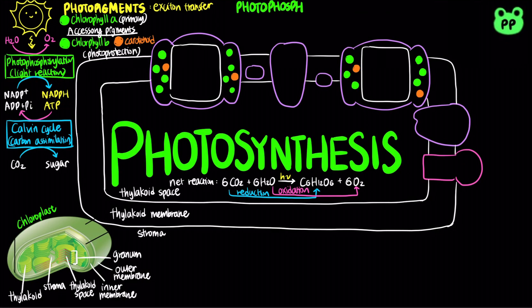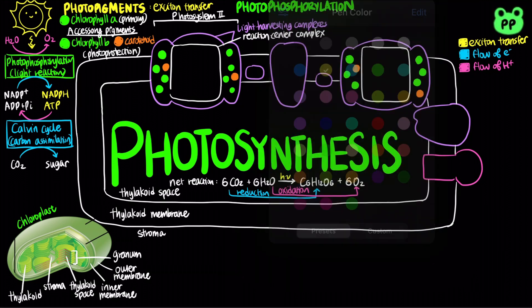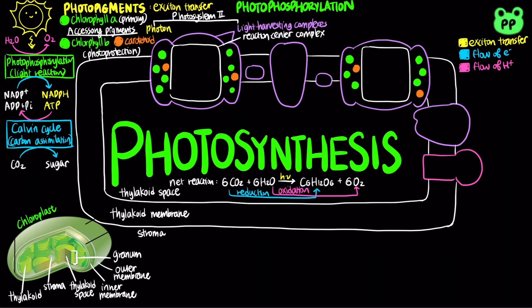Photophosphorylation, or light reactions, begin in Photosystem II, which contains a reaction center complex surrounded by light-harvesting complexes. First, a photon strikes the light-harvesting complex of Photosystem II, exciting a photopigment. The light energy is relayed among several photopigments through exciton transfer until it reaches a special pair of photopigments in the reaction center known as P680.